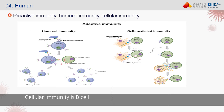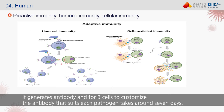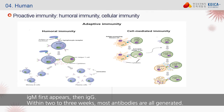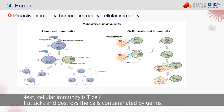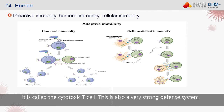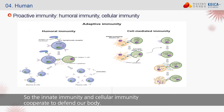Humoral immunity involves B cells generating customized antibodies suited to each pathogen, which takes around seven days. IgM appears first, then IgG. Within two to three weeks, most antibodies are generated and strongly neutralize the pathogens. Cellular immunity involves T cells — specifically cytotoxic T cells — which attack and destroy cells contaminated by germs. This is also a very strong defense system. Innate immunity and adaptive immunity cooperate to defend our body.